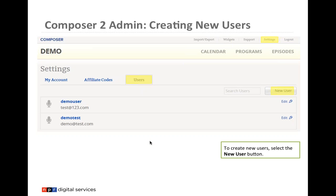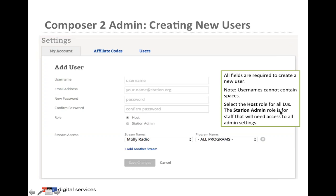One of the first things you'll want to do when getting set up with Composer 2 is create new users — for anyone who needs to edit or create programs, or edit and manage playlists. That includes your program director, show hosts, any interns or volunteers who input playlist information. To create a new account, go to Settings and select Users, then click the New User button.